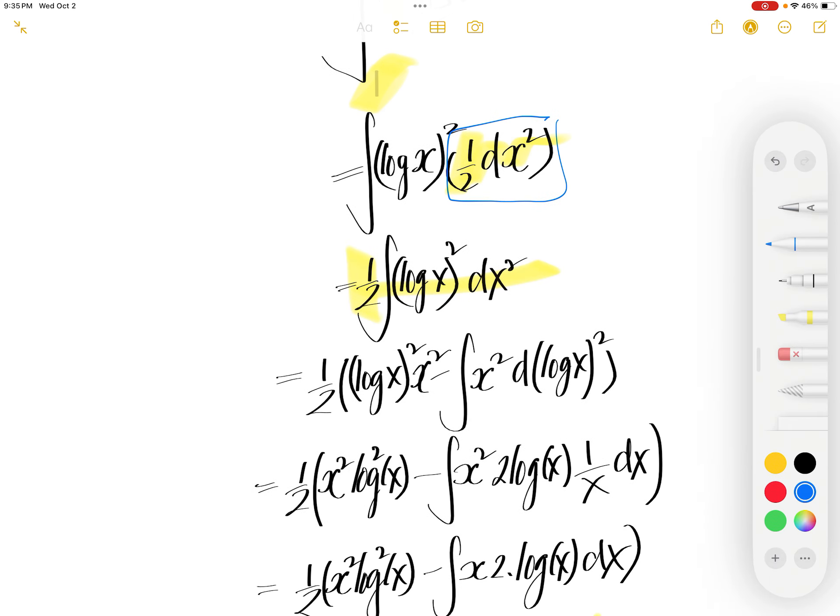Now we can treat this as u and then this piece as v. When we have integral of u dv, we have uv minus integral v du. V du applying the IBP, integration by parts. Here's the uv integral v du.